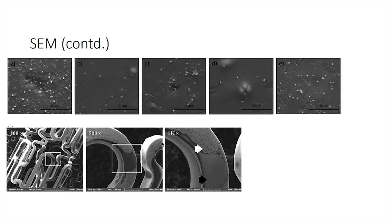Two important parameters in microscopy are magnification and resolution. Magnification determines how much you can magnify a sample, while resolution determines how detailed the image is. Resolution depends on magnification, but in SEM if you go above 10 nanometers the image would not be detailed — you would need higher-end equipment. Magnification can be high but you would not get a clear picture, so resolution is very important in microscopy.